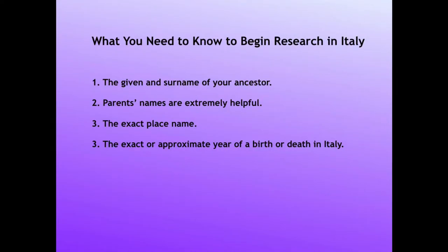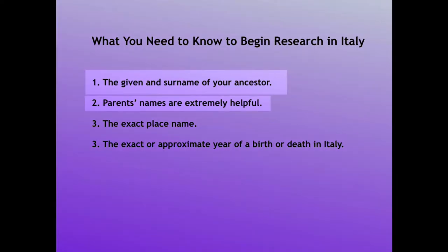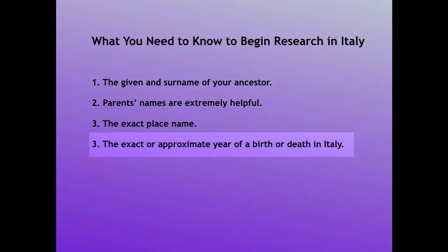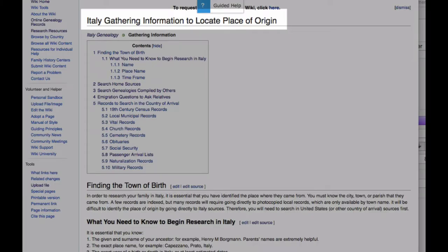In order to make that jump across the ocean and identify the correct ancestors in Italy, you need to know the name of the immigrant ancestor, hopefully their parents' names, the exact town they came from, and at least an approximate year of birth or death. The article "Italy, Gathering Information to Locate Place of Origin" is a very thorough checklist of the different places you might find this information.